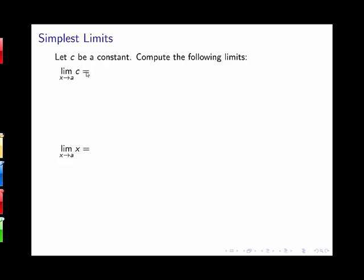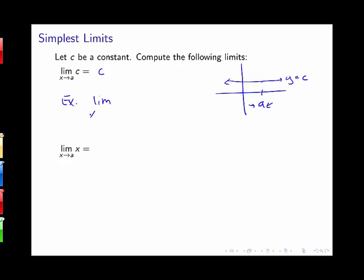Let's say that we have c as a constant, and we want to compute the limit as x goes to a of c. We can use what we know about graphs to create the rule: if I have a graph of y equals some constant c and a value a that I'm approaching, then as x approaches a, the value of my function approaches c. So the limit as x goes to a for any constant c is equal to c. For example, the limit as x goes to 2 of 5 would be 5.